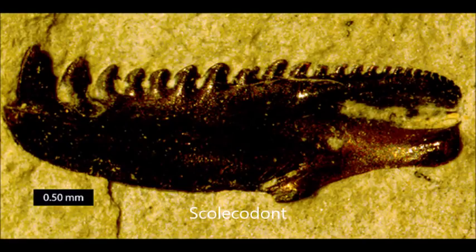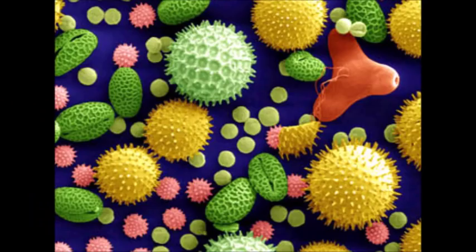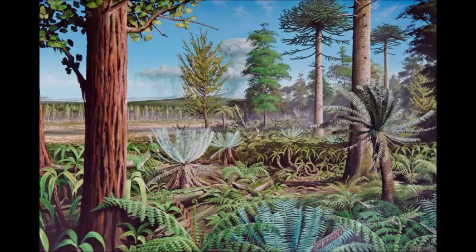Don't worry, we'll cover each one. First, pollen grains are the male gametes of plants, and because of their tough sporopollenin outer casing, they are pretty good at getting preserved in the fossil record. For example, pollen recovered from the late Cretaceous and early Cenozoic of Antarctica shows that the continent had lush, conifer-dominated rainforests, flowers, and cool-to-warm climates.